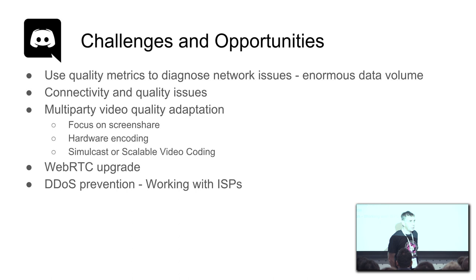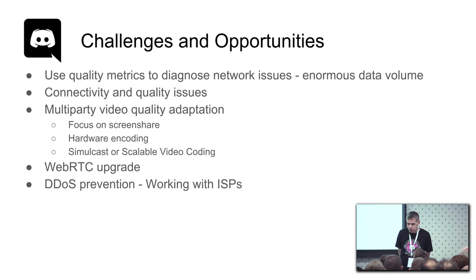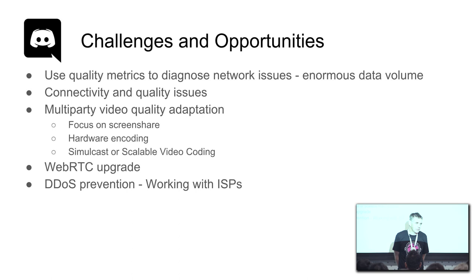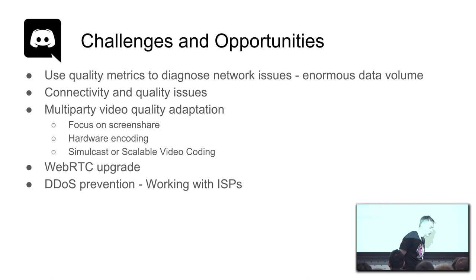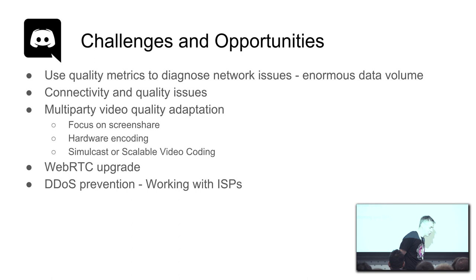That was pretty much my presentation. For our challenges and opportunities: we collect quality metrics on both the client and the server, and dealing with the sheer volume of data — keeping our data pipeline up and able to extract quality data — is a challenge by itself. We use this data to detect connectivity problems or problems with our servers. We're also working on multi-party video quality adaptation, since a very popular use case is streaming your game, which requires pretty complex algorithms. For more information, we have an engineering blog with a lot of interesting articles. Thank you very much, I'd like to open for any questions.